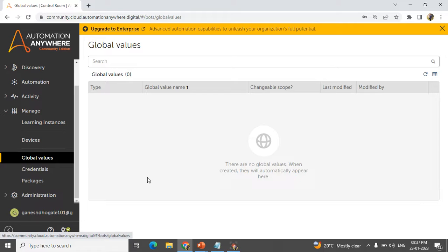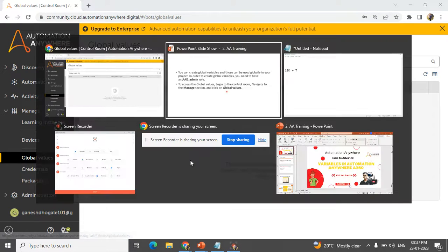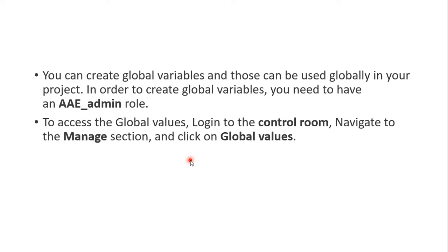I hope you have understood what a variable is and all the types of variables in Automation Anywhere. In the next session, we will see how to use these variables in real-time projects. If you are new to my channel, please subscribe and hit the bell icon. Thank you very much, happy learning! If you have any questions, you can ask in the comments or connect with me on WhatsApp, LinkedIn, or any social media listed in the description.